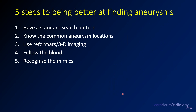In summary, here are the five steps to get better at finding aneurysms. One: have a standard search pattern and go through it the same way every time. Two: know your common aneurysm locations — anterior communicating artery, carotid terminus, MCA, then posterior fossa. Three: use your reformats to your advantage to clarify findings and increase sensitivity in certain areas. Four, and my favorite: follow the blood — look in the area where the hemorrhage pattern points. Five: recognize the mimics, so you don't overcall aneurysms when there's an atypical demographic or distribution.